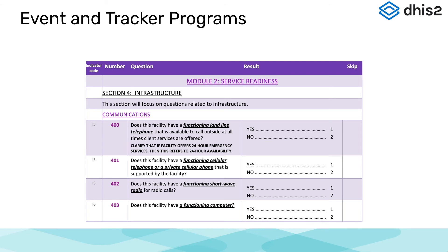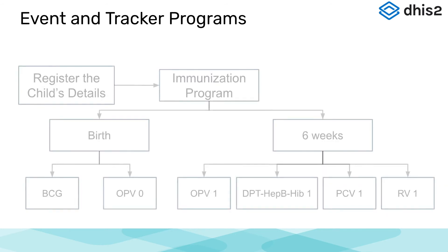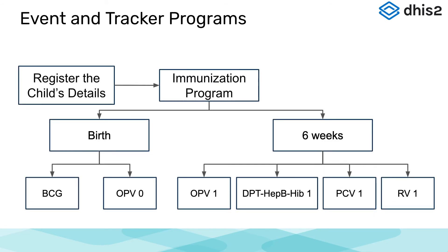We will be referring to this facility assessment later in the course as an example of an event program. Tracker programs are the second individual-based data model, where a unique entity is tracked — this often means a person. For example, following a child through their immunization schedule by entering their details and identifying which vaccines they have received during each individual visit.